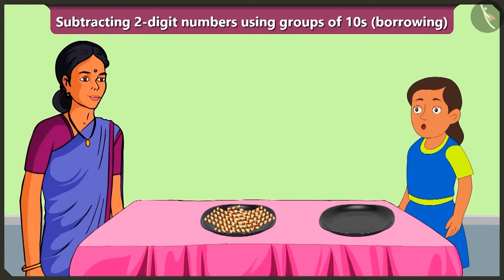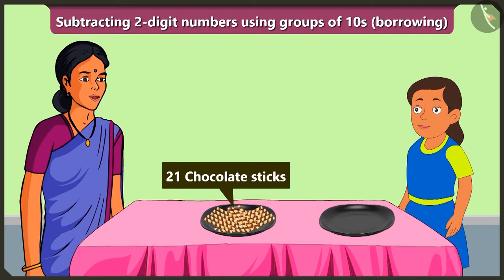Bubbly, there are a total of twenty-one chocolate sticks. If you will take twelve sticks from a total of twenty-one sticks, then how many sticks would Bunty get?